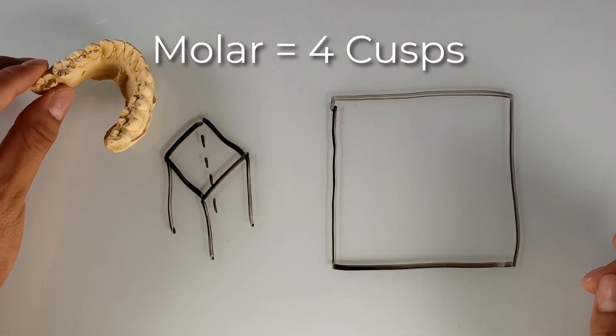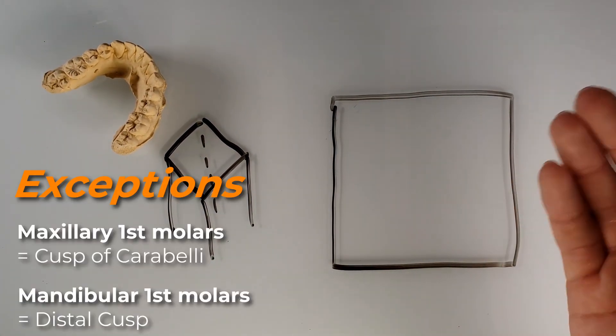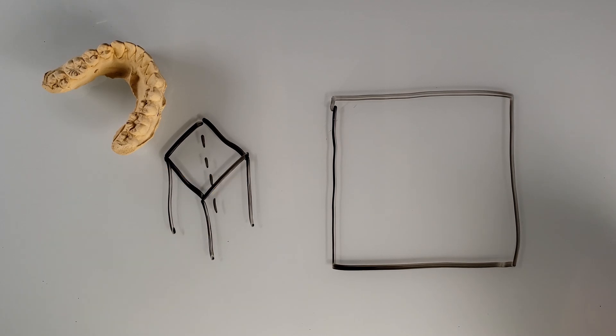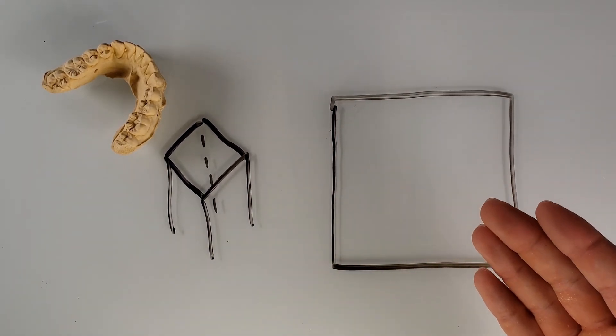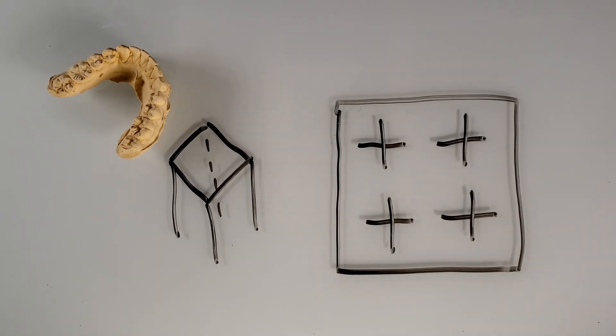Most molars have four cusps. The exceptions are the first molars. I'll put those exceptions down below. Now if we're looking at four cusps and this is the occlusal view, it'll look something like this from the overhead view. All right, so what we have is four cusps.